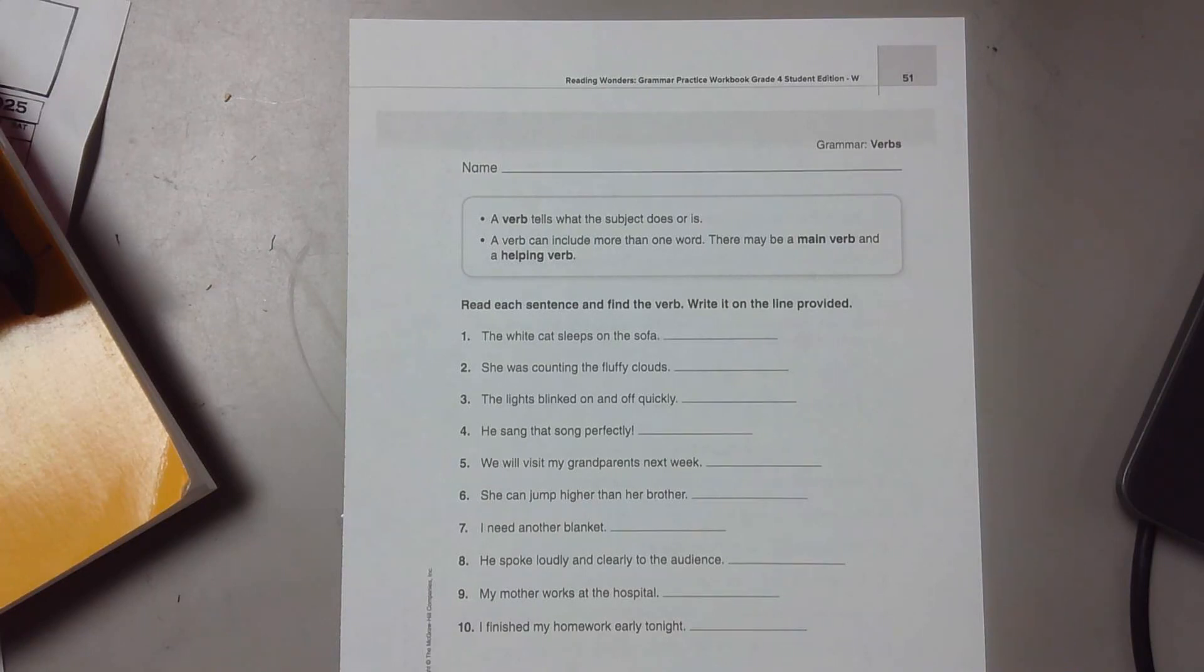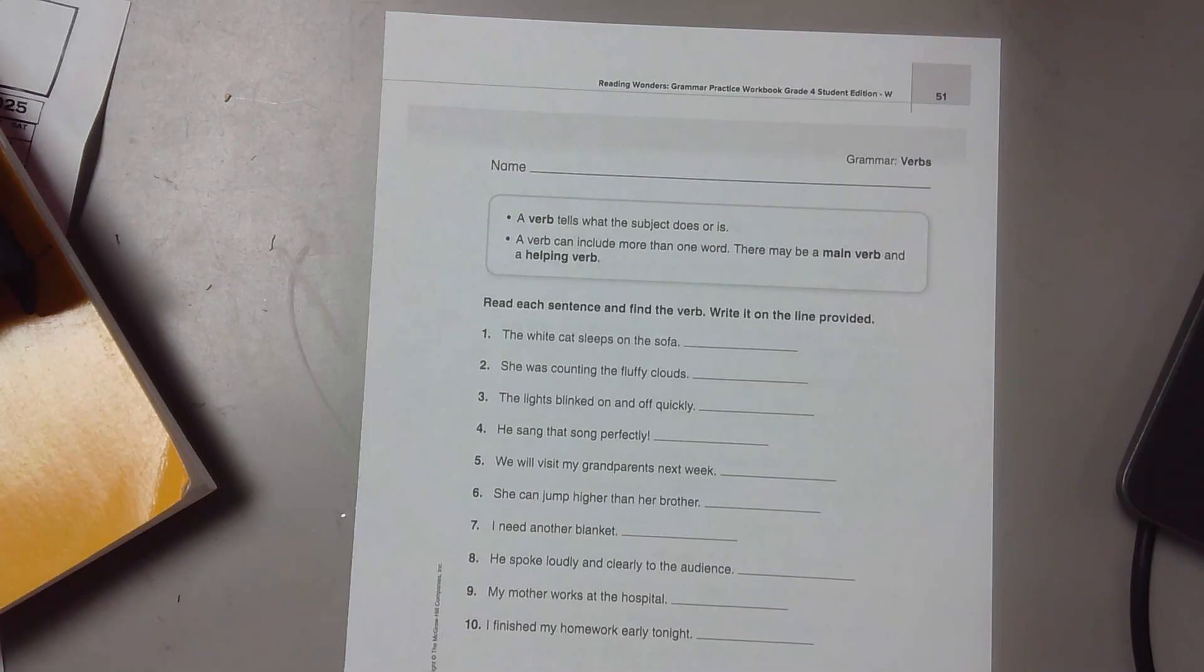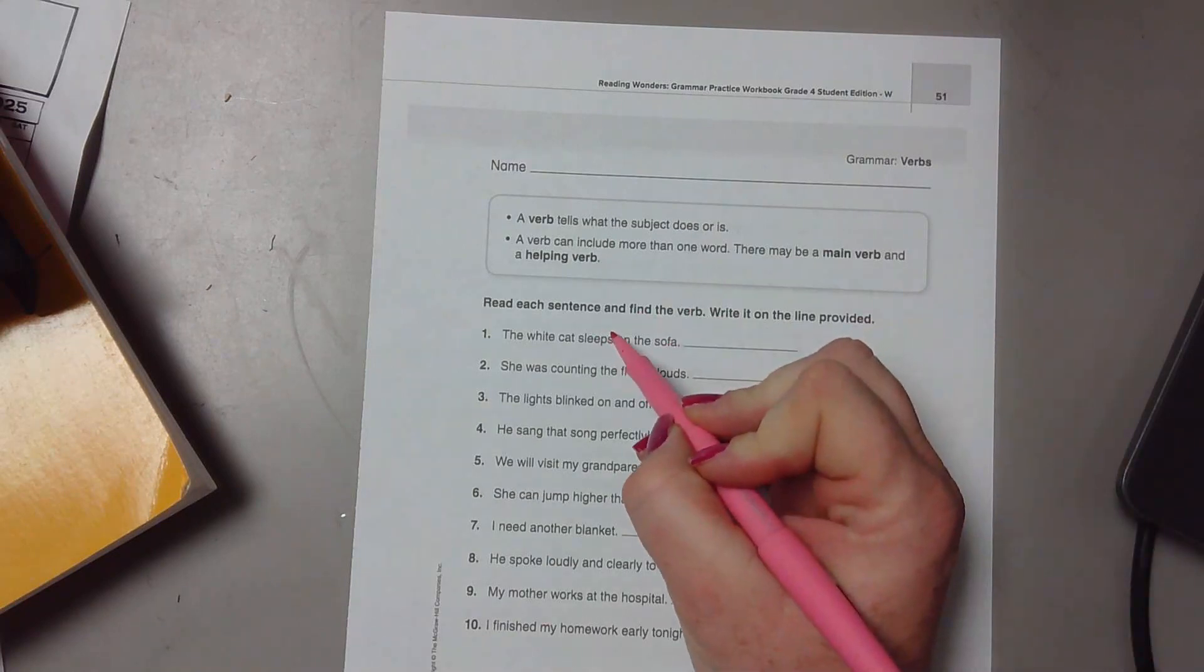Read each sentence and find the verb. Write it on the line provided. So we're going to go through and read the sentence, find our verb, I'm going to circle the verb, and then we can go back through and write them. Number one: the white cat sleeps on the sofa. What is our verb? Sleeps. Good, it's what the cat does.